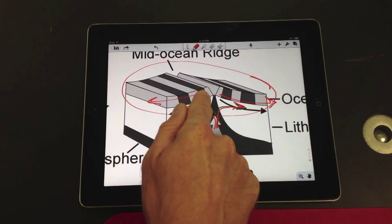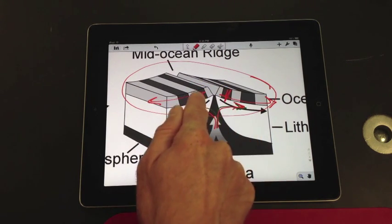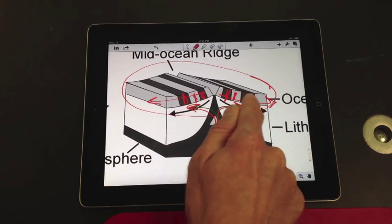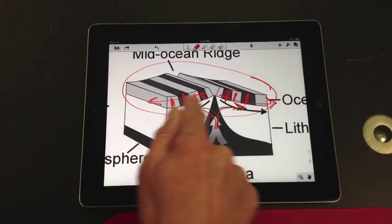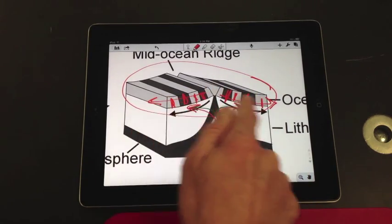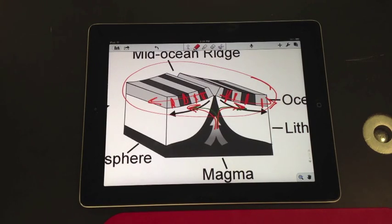But in the past, the North Pole has been in different places. And so we're looking at these patterns of magnetic reversals as you're looking at the rock going in either direction from the mid-ocean ridge.